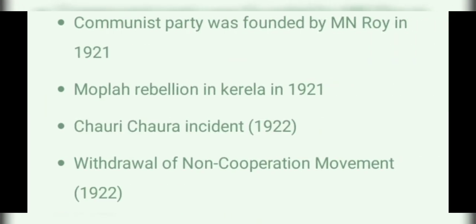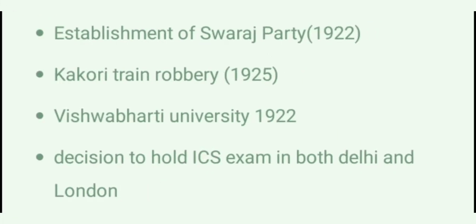Lord Reading, 1921 to 1926. Communist Party was formed by M. N. Roy in 1921. Mopla Rebellion in Kerala in 1921. Chauri Chaura Incident 1922. Withdrawal of Non-Cooperation Movement 1922. Establishment of Swaraj Party 1922. Kakori Train Robbery 1925. Vishva Bharati University 1922. Decision to hold ICS exam both in Delhi and London.